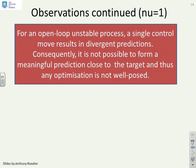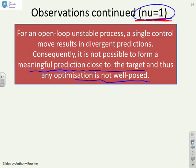For an open loop unstable process, a single control move, that is with nu equals 1, is not sufficient to stabilize the predictions in any sense, and so you end up with divergent predictions. Consequently, it's not possible to form a meaningful prediction close to the target, and thus any optimization is not well posed. So what I'm saying is you cannot really use nu equals 1 if you have an open loop unstable process. It will not give you a sensible optimization.